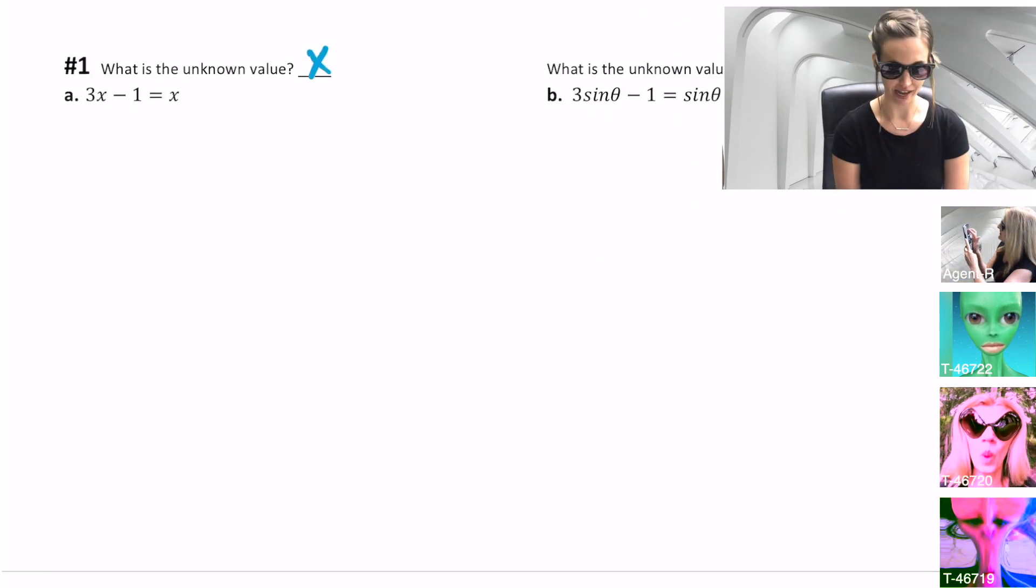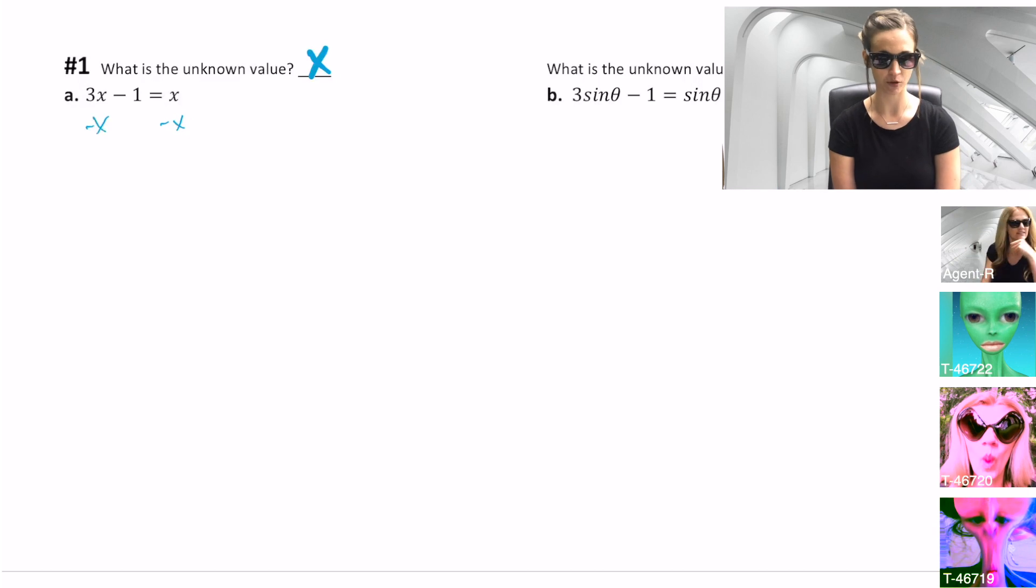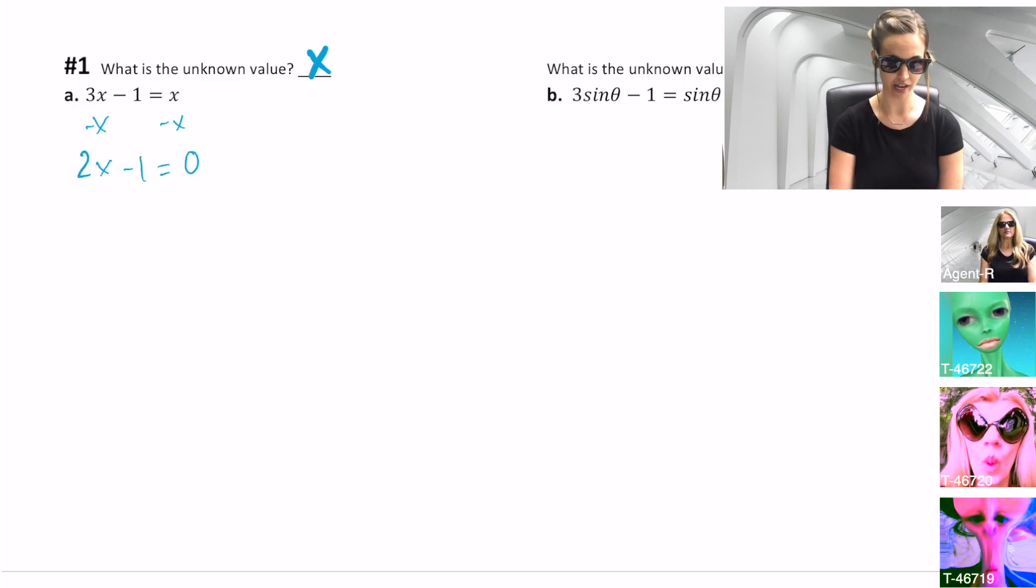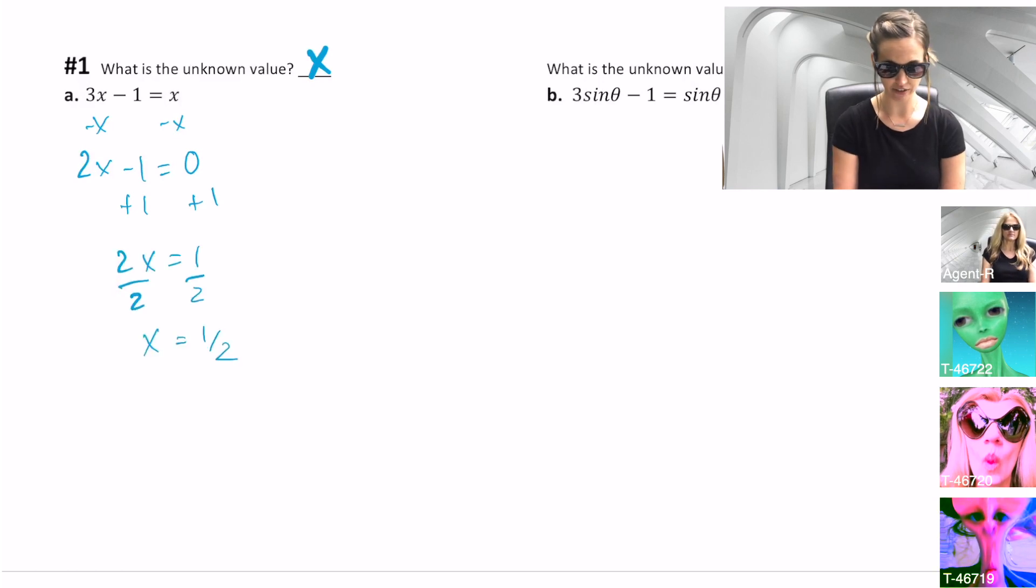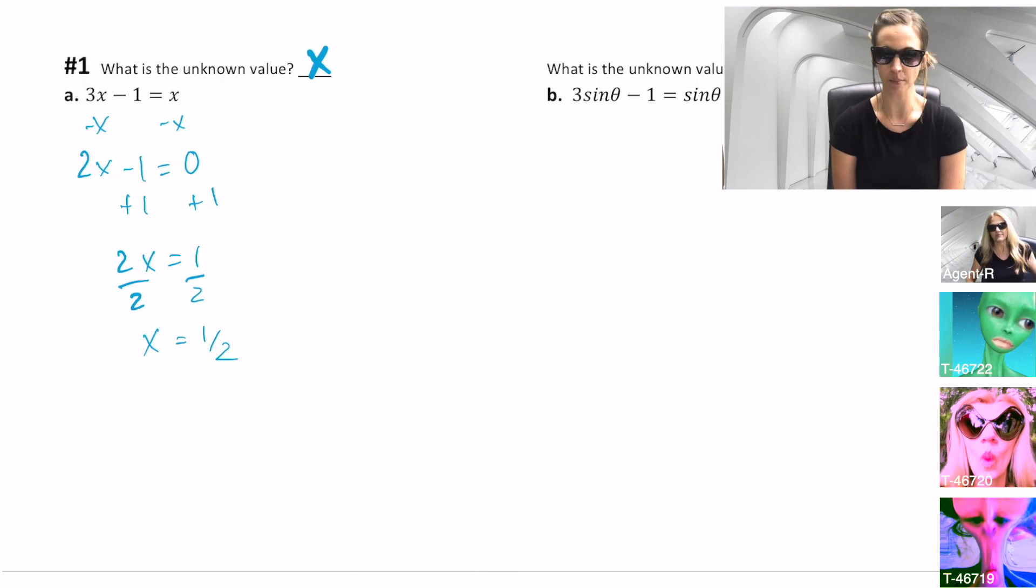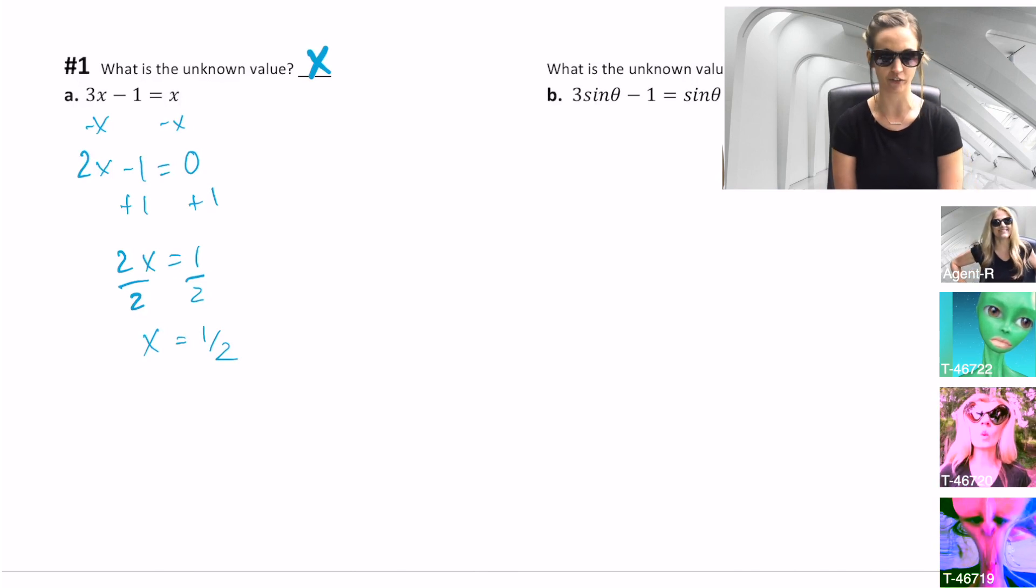3x minus 1 equals x. First, I'm going to subtract x from both sides. 2x minus 1 equals 0. Now I will add 1 to the other side. 2x equals 1. And finally, divide by 2 to get x equals 1 half. See? Pretty simple. Just a linear equation solving for x.